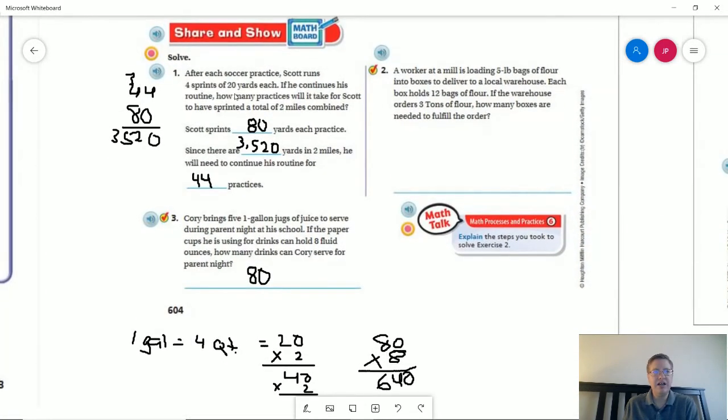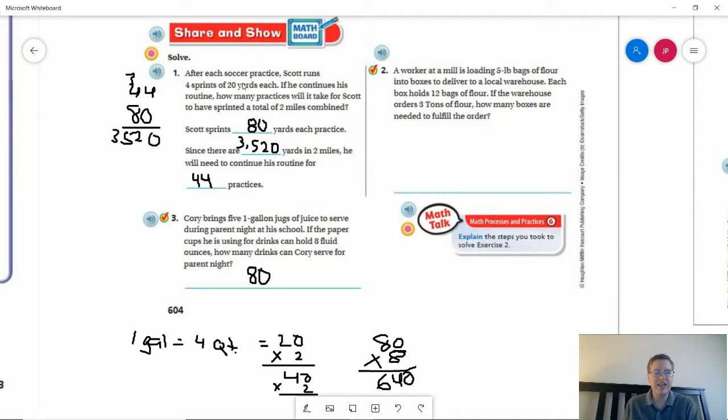So number one at the bottom, after soccer practice Scott runs four sprints of 80 yards each. If he continues his routine how many practices will it take? Well if you want to break out a calculator what we ended up with was 4 times 80 gives us 320, there are 3520 yards in two miles and so we would need to do that routine 44 practices to do that. What I ended up doing was division and then I used multiplication to check my answer to make sure I did it correctly, so that's what you're seeing here was when I did multiplication to check my answer.